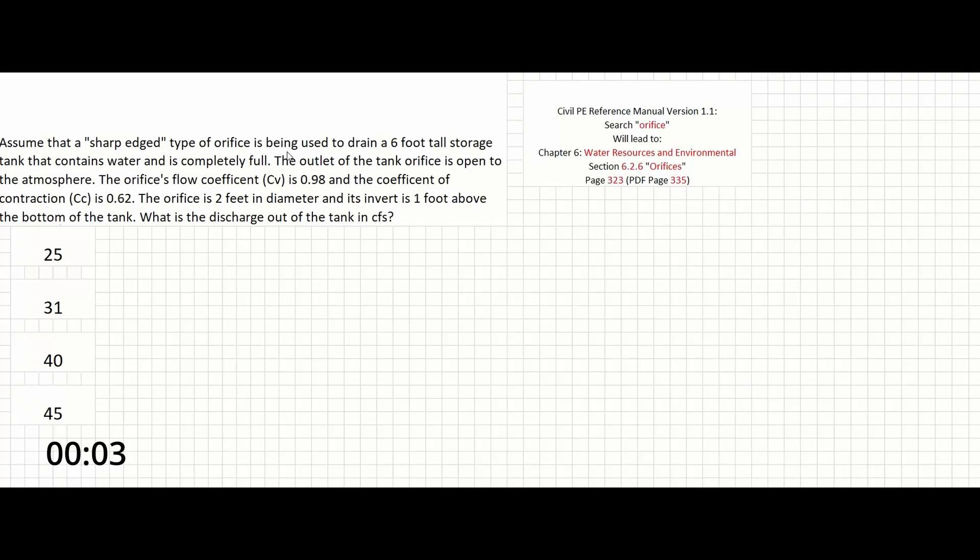Assume that a sharp-edged type of orifice is being used to drain a six-foot tall storage tank that contains water and is completely full. The outlet of the tank is open to the atmosphere. The orifice's flow coefficient CV is 0.98 and the coefficient of contraction CC is 0.62. The orifice is two feet in diameter and its invert is one foot above the bottom of the tank. What is the discharge out of the tank in CFS?